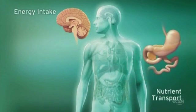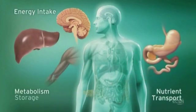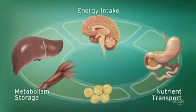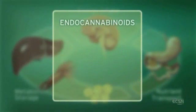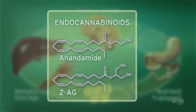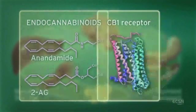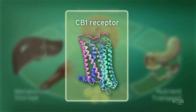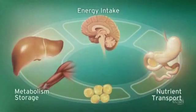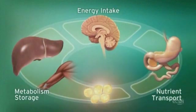The ECS regulates these processes through endogenous ligands such as anandamide and 2-arachidonyl glycerol, and the CB1 receptor. CB1 receptors are located in the brain, digestive tract, muscle, and adipose tissue.